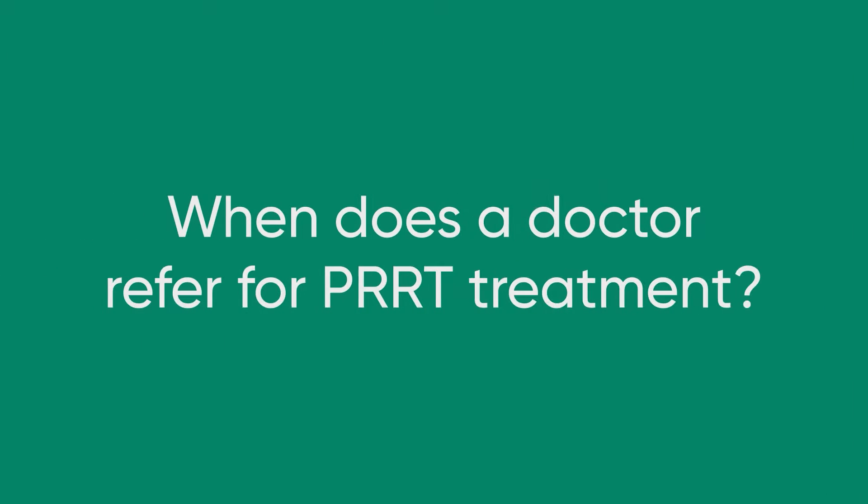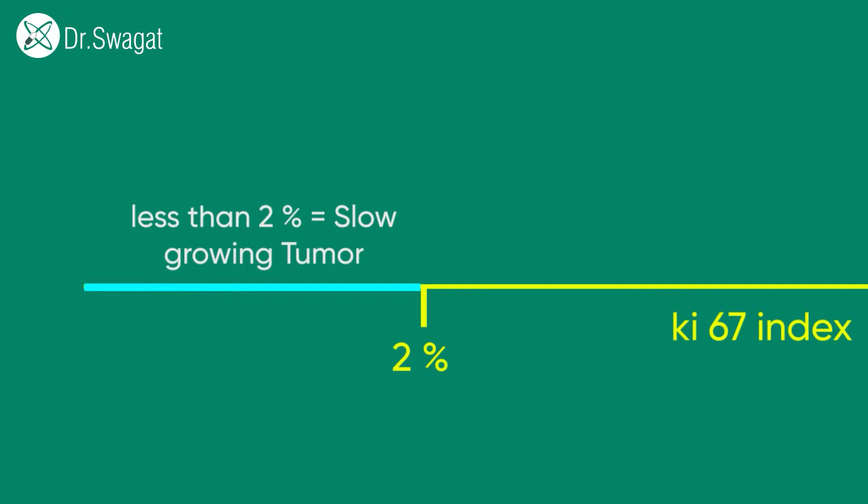Now, when would your doctor consider referring you for PRRT? To answer this, we need to understand the grading of neuroendocrine tumors. It is usually graded as grade 1, grade 2, or grade 3, depending on the KI-67 index. You must have seen KI-67 or MIB index mentioned in your biopsy report. When the KI-67 or MIB index is less than two percent, it is a very slow-growing, indolent tumor — nothing to be done, just wait and watch.